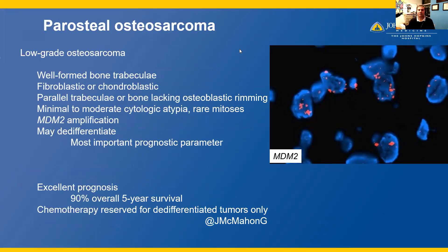Parosteal osteosarcoma is a low-grade osteosarcoma typically seen with well-formed bone trabeculae, and may be fibroblastic or chondroblastic. The parallel trabeculae of bone lack osteoblastic rimming. There is minimal to moderate cytologic atypia and rare mitoses. Parosteal osteosarcoma will have MDM2 amplification and it may de-differentiate — when de-differentiation is seen, that is the most important prognostic parameter. Our case did not have any evidence of de-differentiation. In general, parosteal osteosarcoma has an excellent prognosis with greater than 90% overall five-year survival, and chemotherapy is reserved for de-differentiated tumors only.